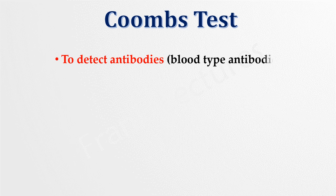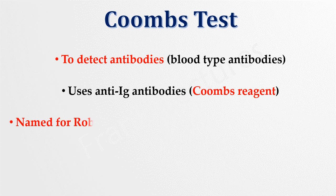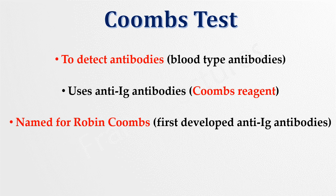The Coombs test in immunology is used to determine the presence of antibodies in the serum of a patient; usually these antibodies are blood type antibodies. This test uses anti-immunoglobulin antibodies to detect antibodies in the serum of a patient. These anti-immunoglobulin antibodies are also known as Coombs reagent, named for Robin Coombs who first developed anti-immunoglobulin antibodies. This test is also known as the anti-globulin test.